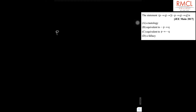Here is the truth table for P and Q. If P is true, true, false, false — and Q is true, false, true, false.